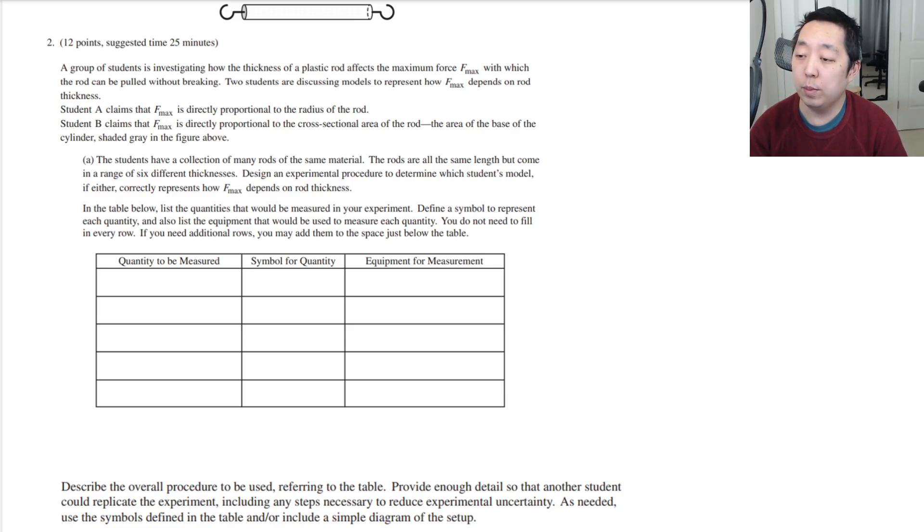Okay, in the table below, list the quantities that would be measured in your experiment. Define a symbol to represent each quantity and the list of equipment that you would use to measure each quantity. You do not need to fill in every row. So we're going to just test on different rods how much force is necessary before it breaks. Let's assume that whatever we're going to use to measure the force is enough.